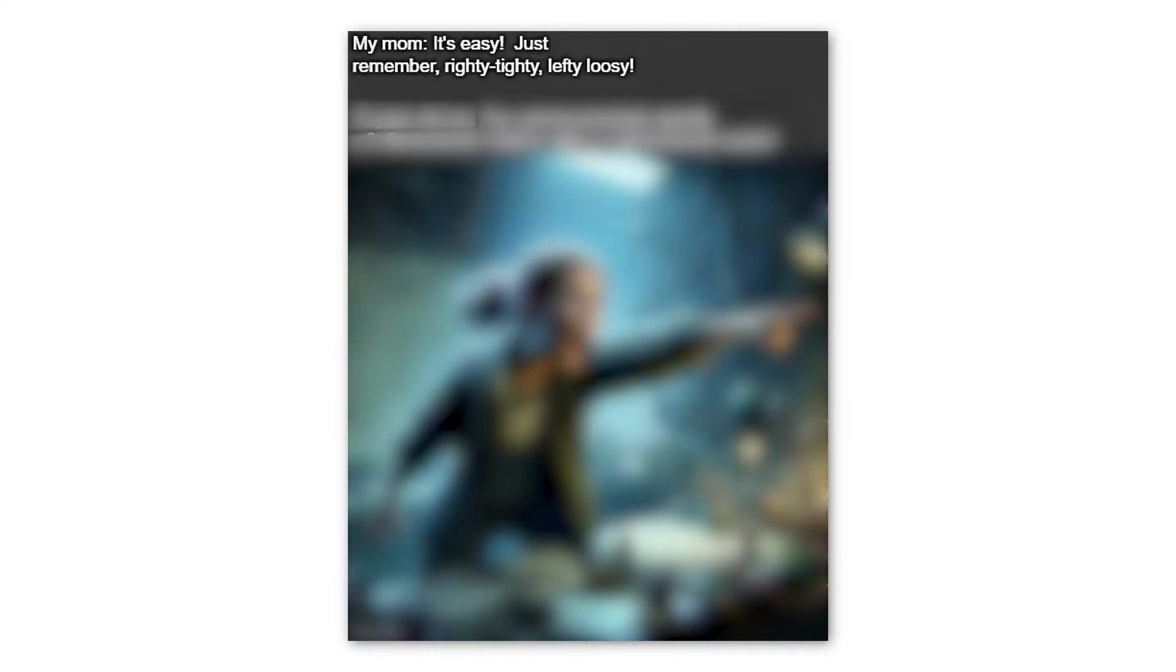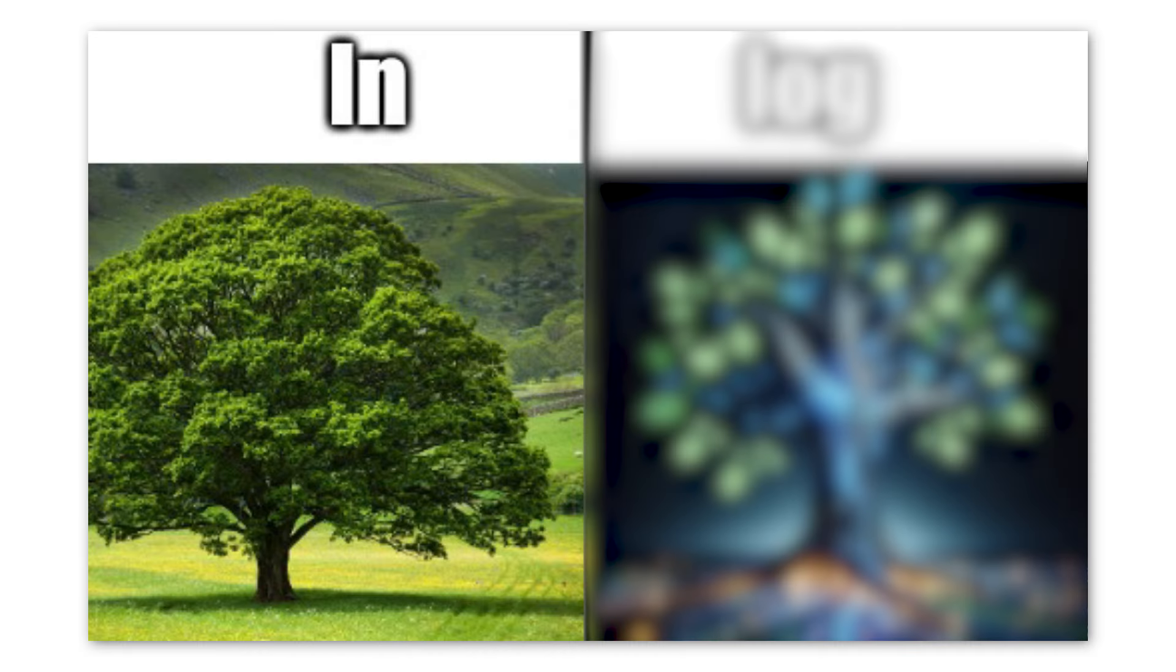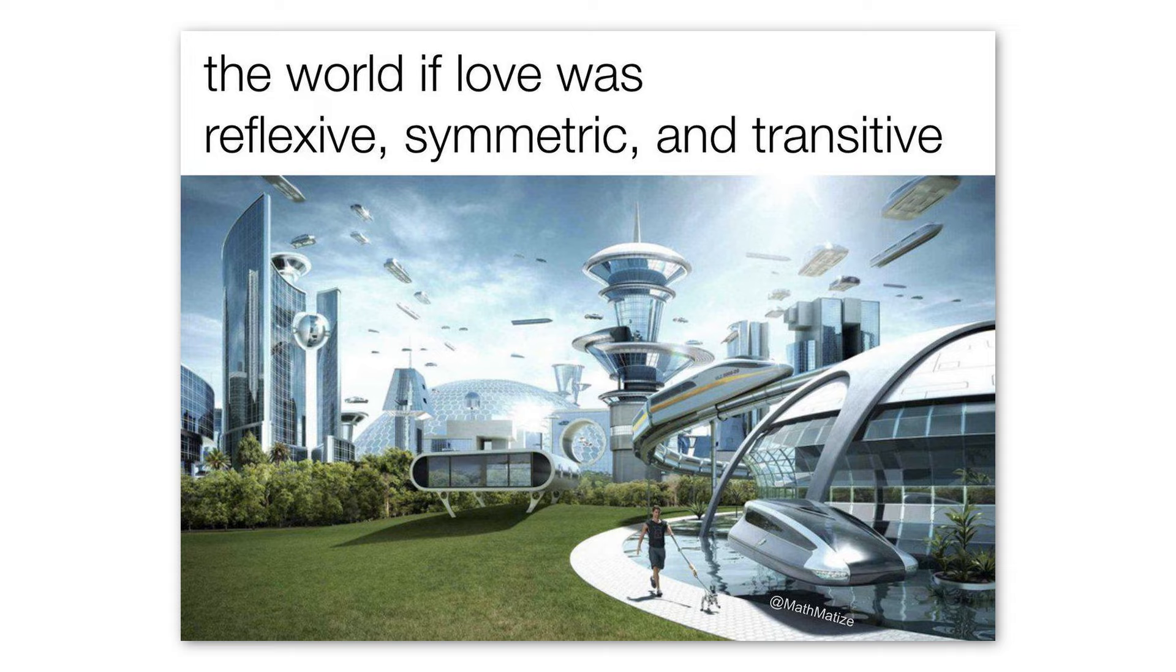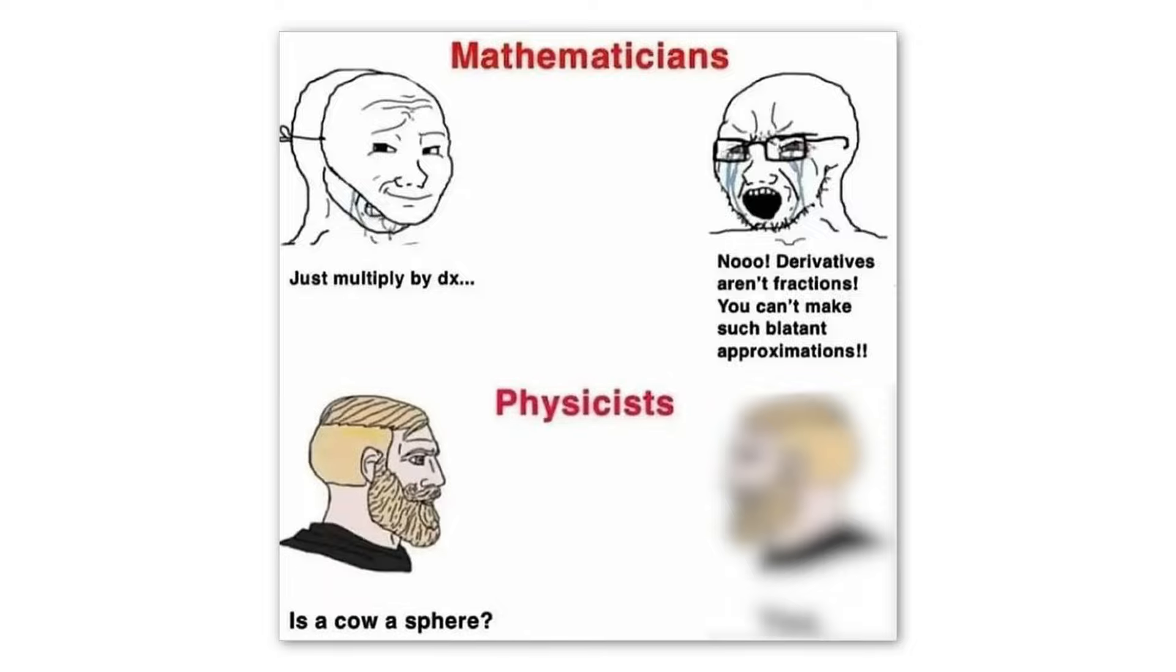My mom, it's easy. Just remember, righty tighty, lefty losey. 12 year old me. You cannot precisely specify a three dimensional rotation with a two dimensional vector. LN. Log. The world if love was reflexive, symmetric, and transitive. Mathematicians. Just multiply by DX. No. Derivatives aren't fractions. You can't make such blatant approximations. Physicists. Is a cow a sphere? Yes.